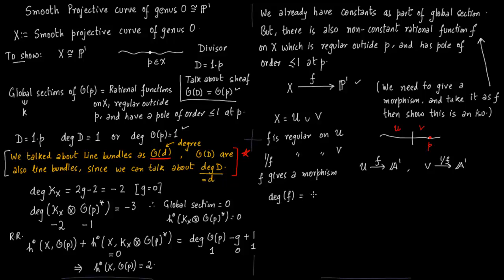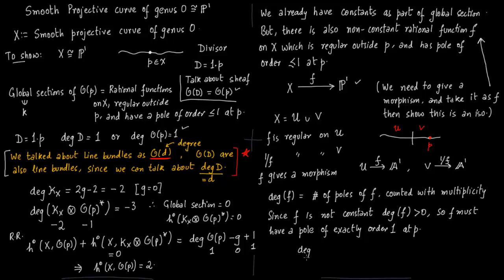Degree of f is number of poles of f which you count with multiplicity. Since f is not a constant, degree of f has to be positive. Now notice that we are talking about degree of morphism. So f must have a pole of exactly order 1 at p. So degree of f is 1, exactly 1, and therefore we have the isomorphism from the corollary before.